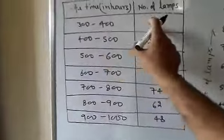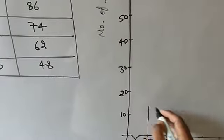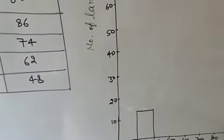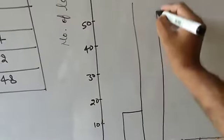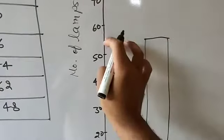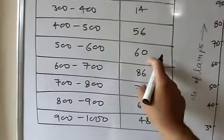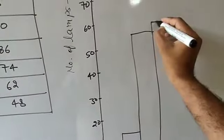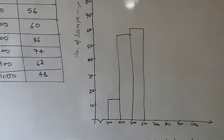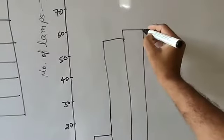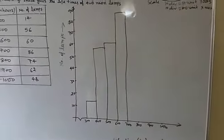Now plot each bar. For 300 to 400, the frequency is 14 — count up to 14 on the graph and draw the rectangle. For 400 to 500, it is 56 — count 1, 2, 3, 4, 5, 6 divisions, giving 56. For 500 to 600, it is 60. For 600 to 700, it is 86 — go to 80 then count up to 86, and draw that rectangle. Use the scale to make each rectangle precisely.